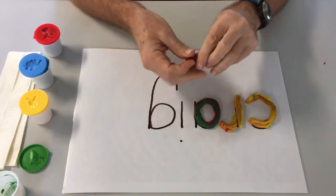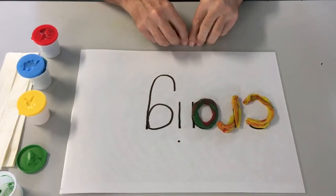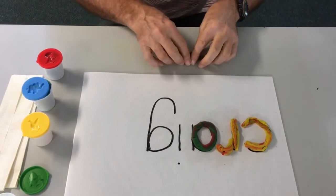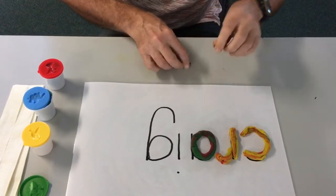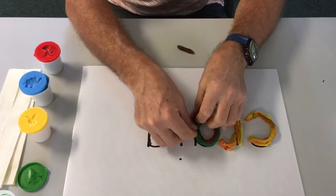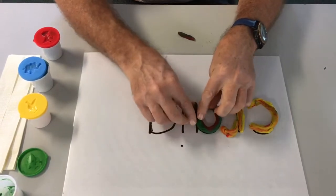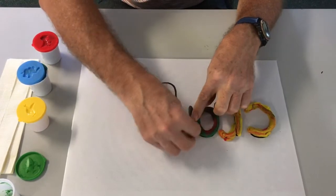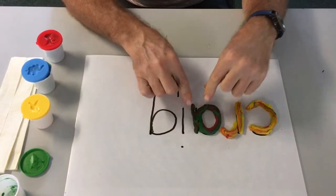Now I need to do the straight bit in the letter A. Rolling this out thin. And I might just put it in there and there. And there we've got the letter A.